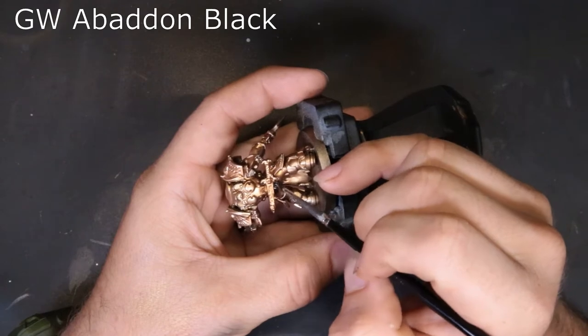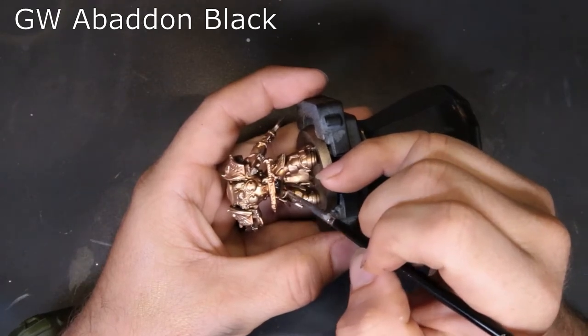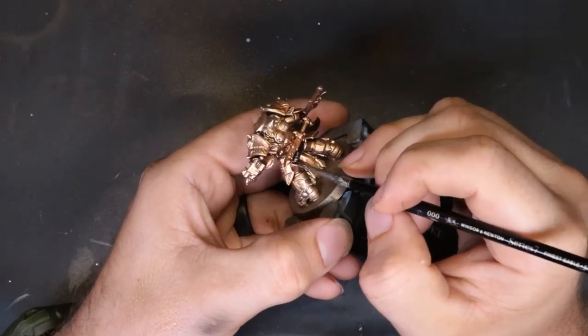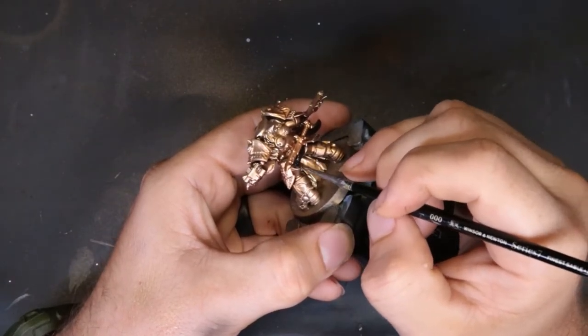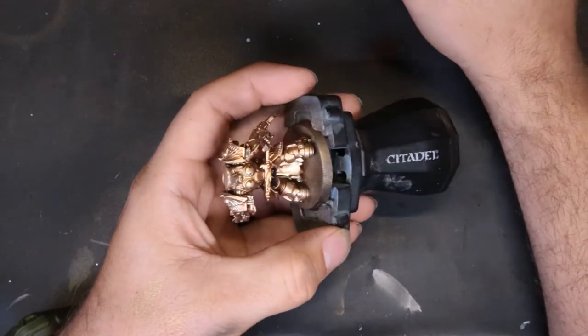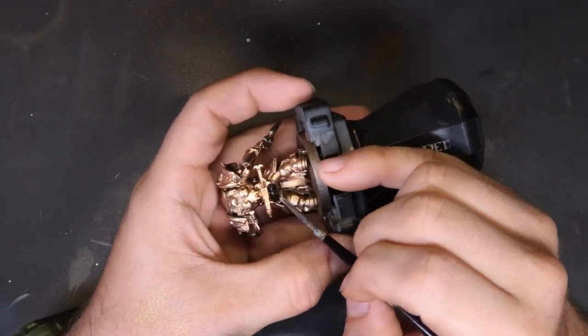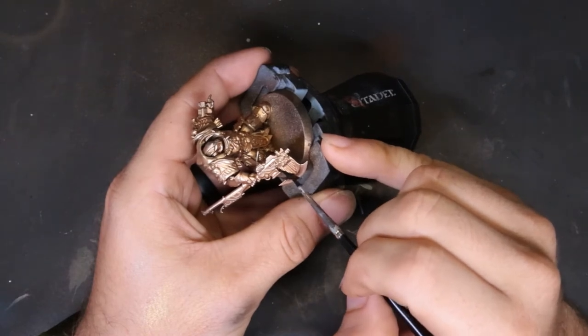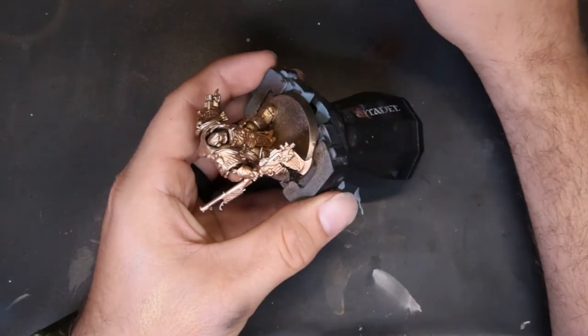We move on to Abaddon Black. We're starting to just line out all the crevices and power armor on this guy. It's only his undercarriage. We're going to go ahead and paint everything that is going to be silver later, but as far as the true black creases in the power armor, anything like this, just the way he is sculpted, we don't have to worry about any of that.